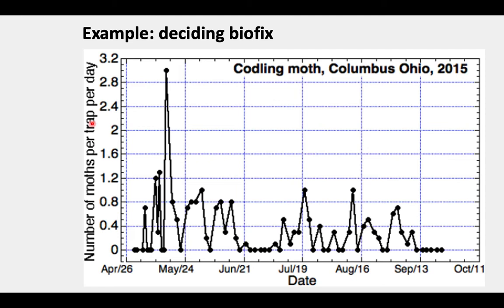Here is the same year shown in graph form, showing the number of moths per trap per day. You can see this was that initial trapping when I wasn't convinced, waited a few days later, and then this was the day I called biofix. After that, we checked less often — I usually check three times a week, but once a week is adequate. You can see there are various ups and downs in the population.